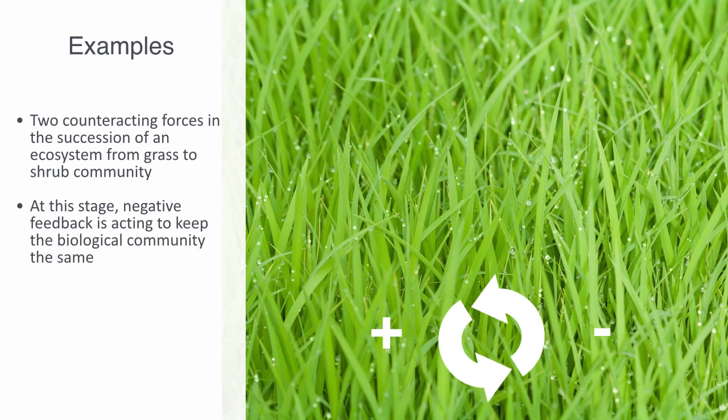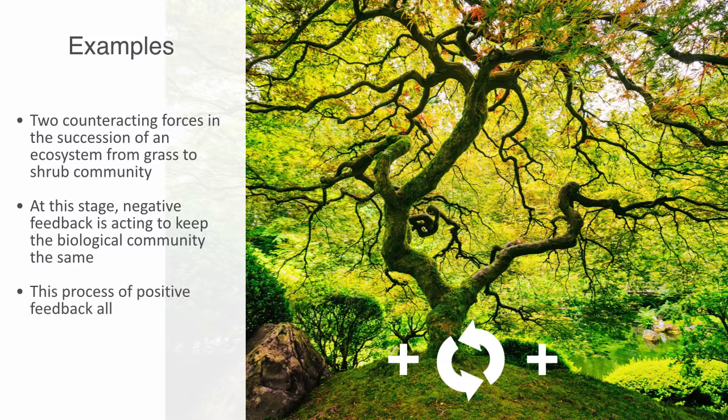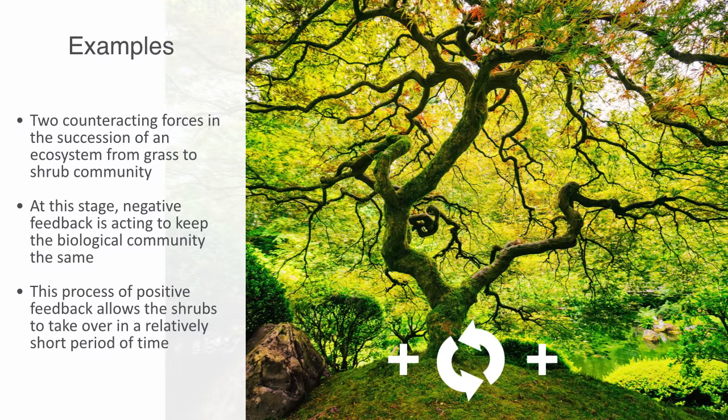However, after a number of years, some of the trees and shrubs which have been growing slowly are finally tall enough to shade the grasses below them. The grasses then have less sunlight for photosynthesis and their growth is restricted. This results in more water for the shrubs, which grow faster and shade the grass even more. This process of positive feedback allows the shrubs to take over in a relatively short period of time.